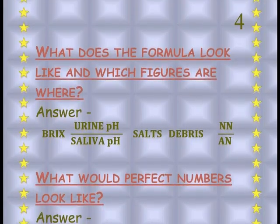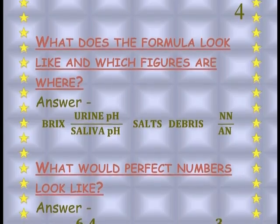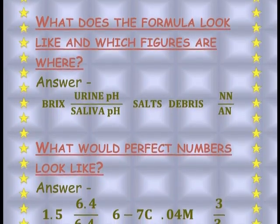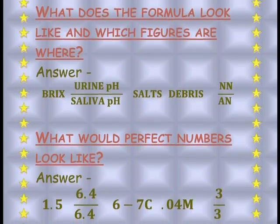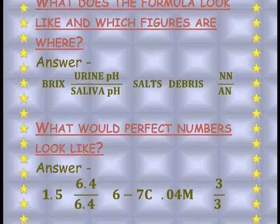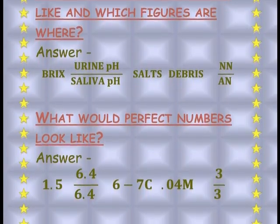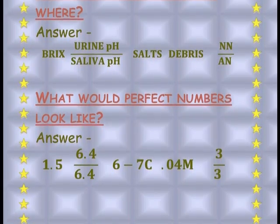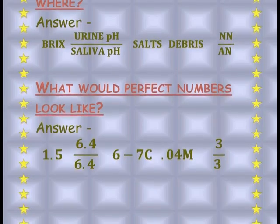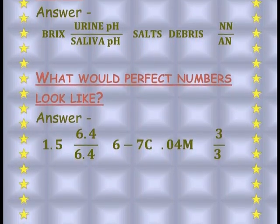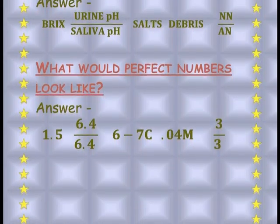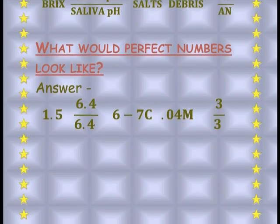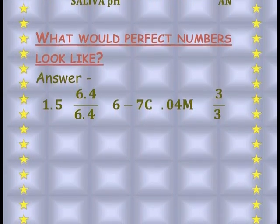What would perfect numbers look like, and which figures are where? First is brix, then you have the urine pH, and directly below that the saliva pH. Then you have the salts, then the cellular debris, then the nitrate nitrogen, and directly below that the ammoniacal nitrogen. The perfect equation, as Dr. Reams published it: 1.5 brix, 6.4 urine pH, 6.4 saliva pH, a salts value between 6 and 7C conductivity units, and 0.04M particles of cellular debris.